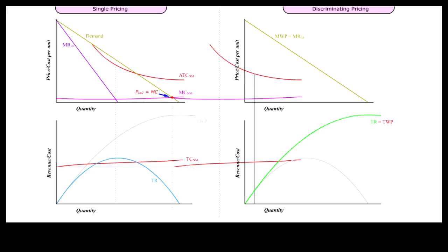Observation 6: Given the same cost curves, the price discriminating monopoly would naturally produce at the maximum efficiency output, where P is equal to MC, because its MR is equal to P.